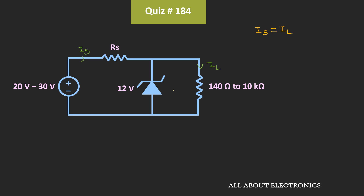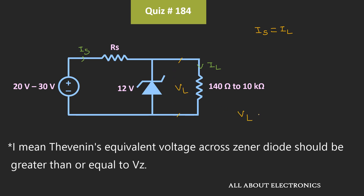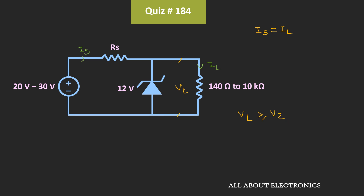In this condition, the voltage across the Zener diode should be at least greater than or equal to the Zener voltage. The voltage across the load VL should be greater than or equal to Vz. If we assume the entire series current Is flows through the load, then VL equals RL divided by (RL plus Rs) times the input voltage, and this voltage should be greater than or equal to Vz. However, when the Zener diode operates in the Zener region, some Zener current also flows, meaning Is should be greater than or equal to the load current.